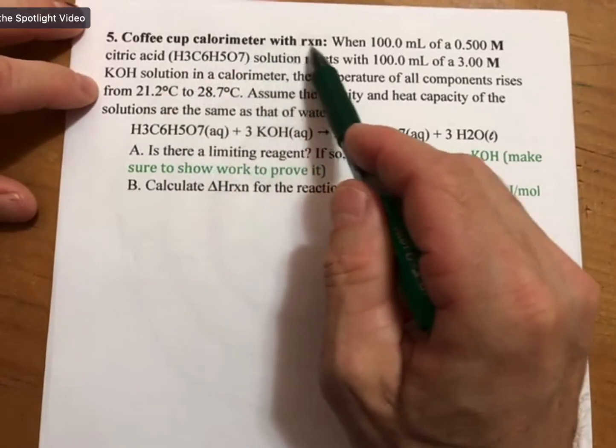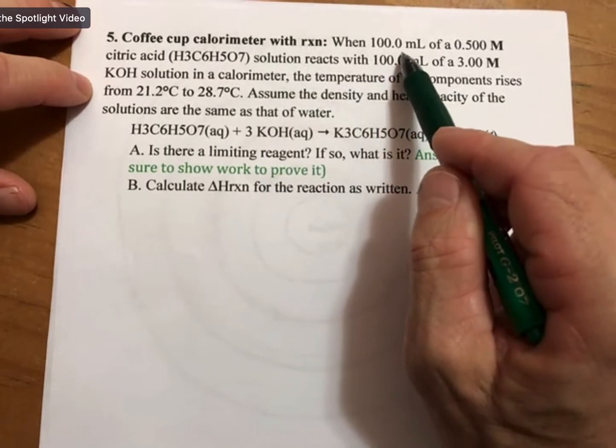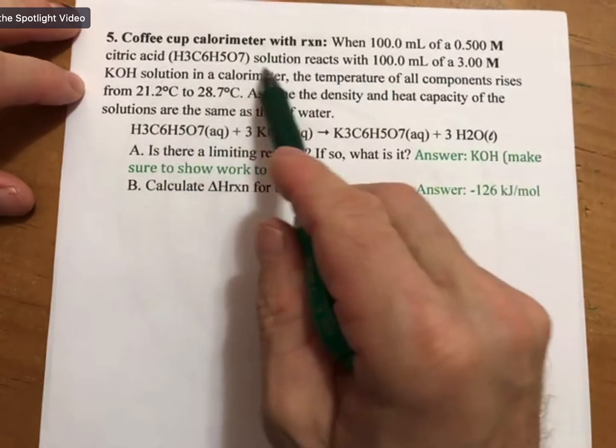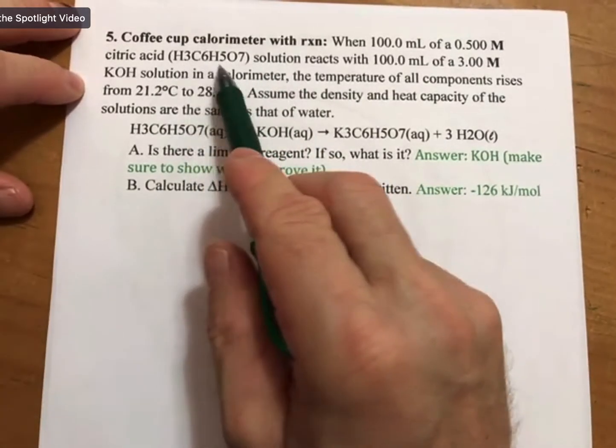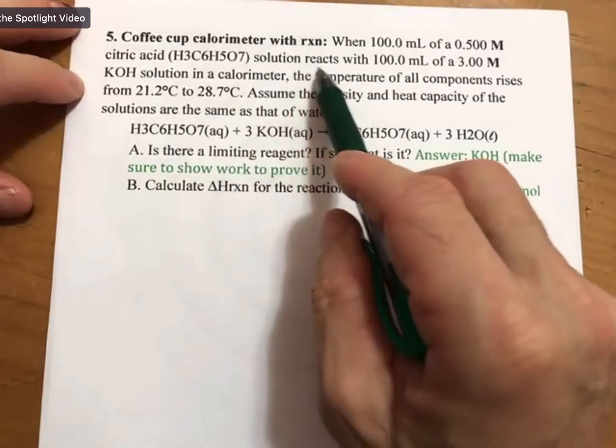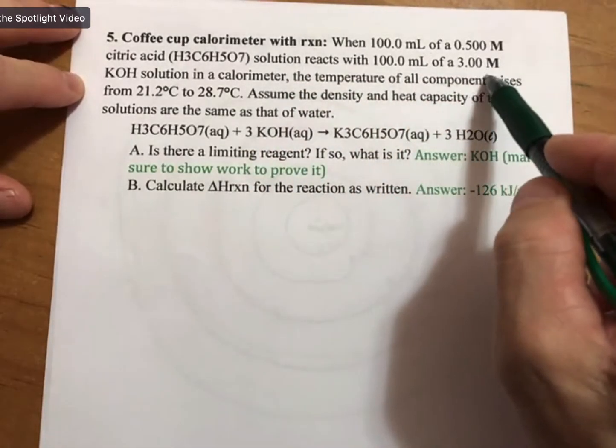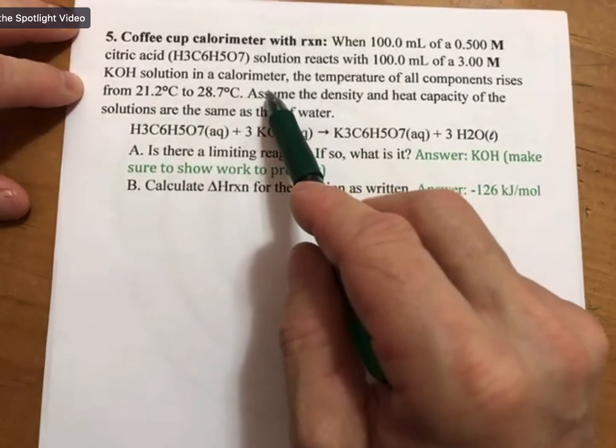It says coffee cup calorimeter with reaction. We have 100 milliliters of a 0.500 molar citric acid solution, and when I cut and paste it, I lost my subscripts, but we'll put them back in. It reacts with 100.0 milliliters of a 3.00 molar potassium hydroxide solution in a calorimeter.